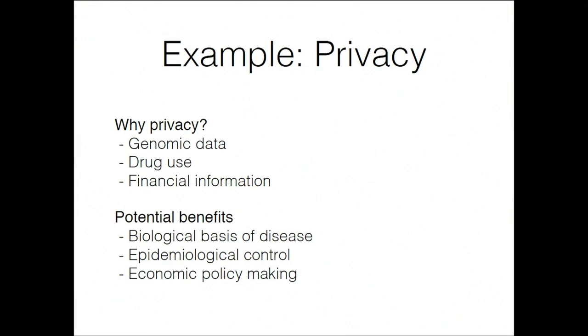There are a number of examples where this can happen, but let me dig into one: my work in privacy. Why privacy? There are many situations where we have data you might want to keep private — your genomic data, whether you use drugs, your financial information. There are many potential benefits both policy- and science-wise: understanding biological bases of disease, doing better epidemiological control, or making better economic policies. The big question is what are the fundamental trade-offs between privacy and statistical utility?